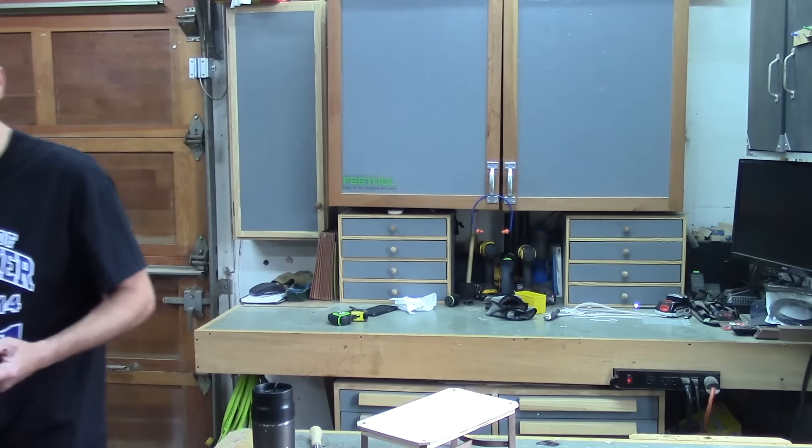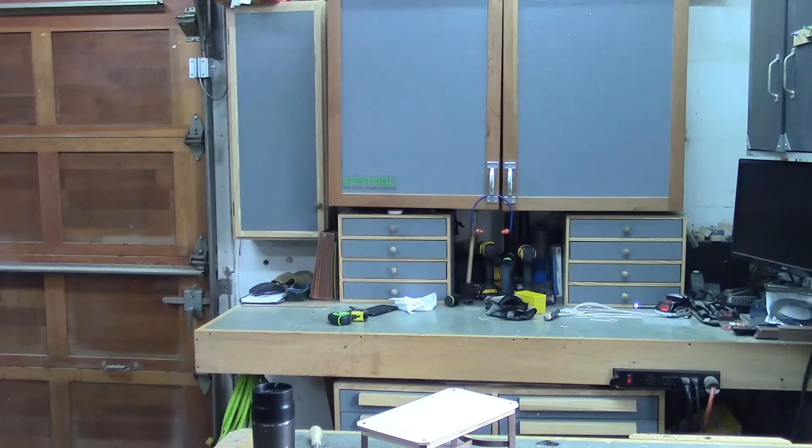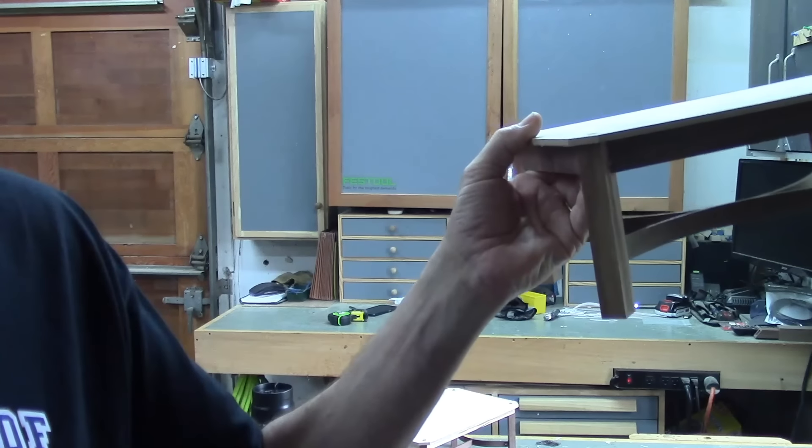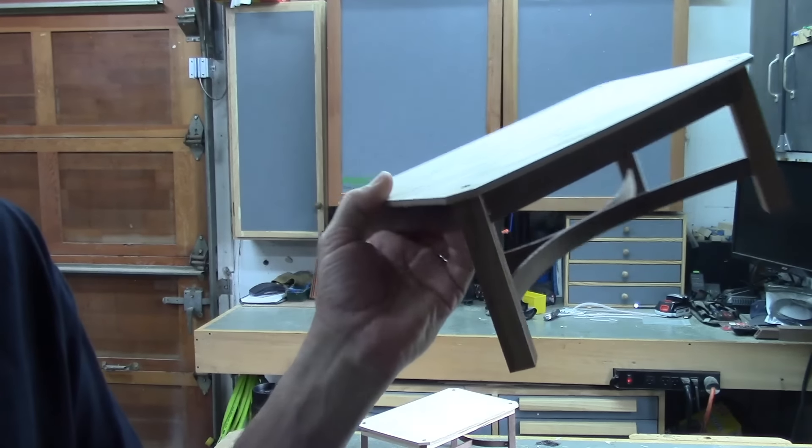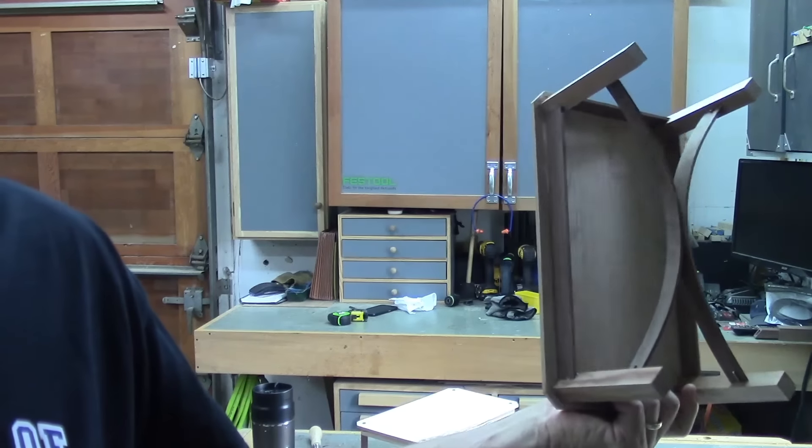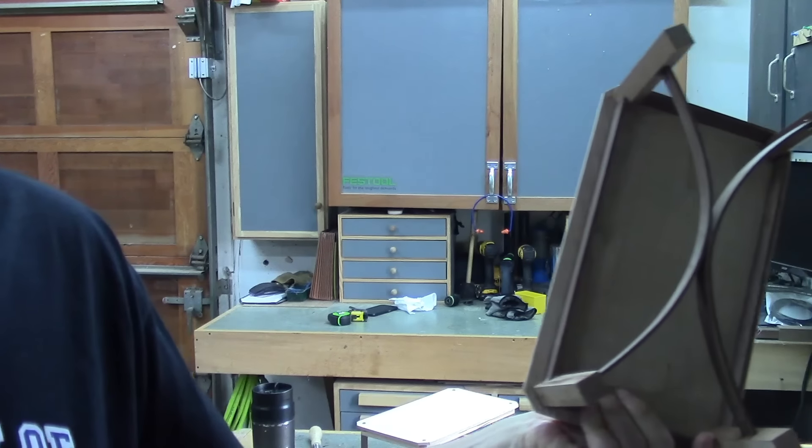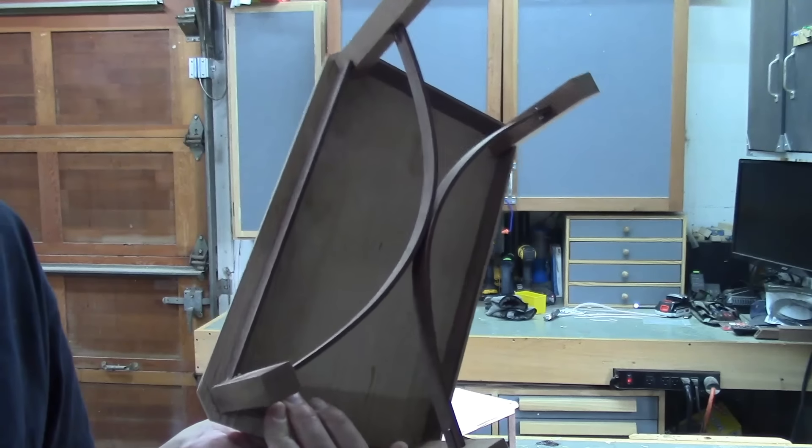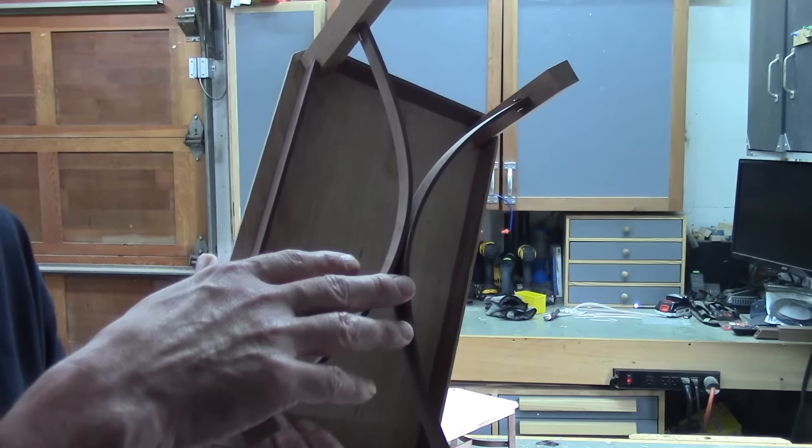I'll bring this in a little bit closer to the camera. This is the table and ignore the size of the legs. Those are going to be much smaller. But what I've got here is a curved trestle design. Let me see if I can get that centered in the camera. Curved trestle design underneath here.